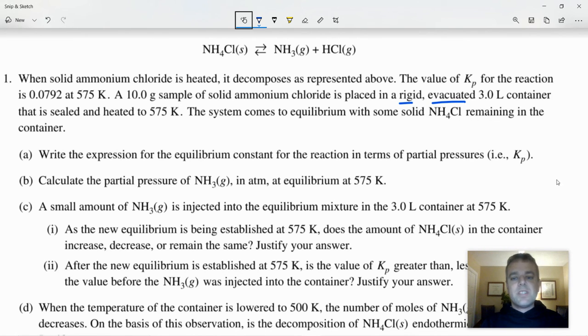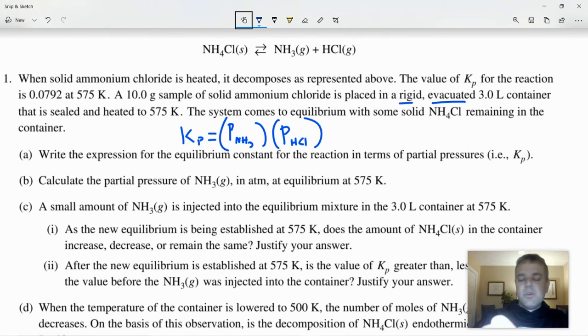It says write the expression for the equilibrium constant for the reaction in terms of partial pressures, KP. So that part should be fairly straightforward. KP equals the partial pressure of NH3 times the partial pressure of HCl.